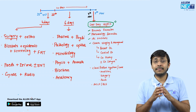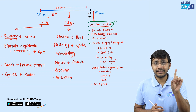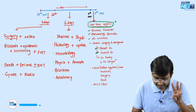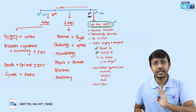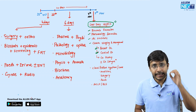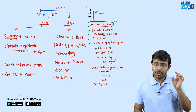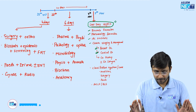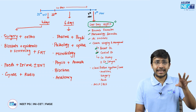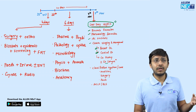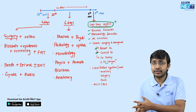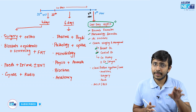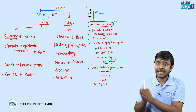Next comes cancer staging and management. Three important cancers: breast cancer, cervical cancer, and ovarian cancer. Breast and cervical cancer will 100% get one or two questions each, so they must be revised on the last day — just the staging and stage-appropriate management. Larynx cancer has a star because it has been asked previously, but it's rare enough that you can skip it if you want.